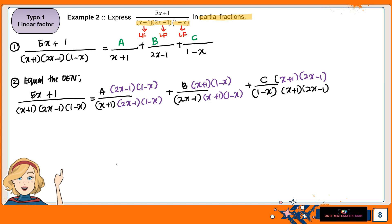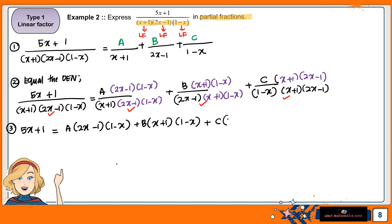Since the denominator is the same on both sides, we can directly compare the numerators. Our main equation becomes: 5x plus 1 equals A(2x minus 1)(1 minus x) plus B(x plus 1)(1 minus x) plus C(x plus 1)(2x minus 1). This is the equation we will use to find A, B, and C.